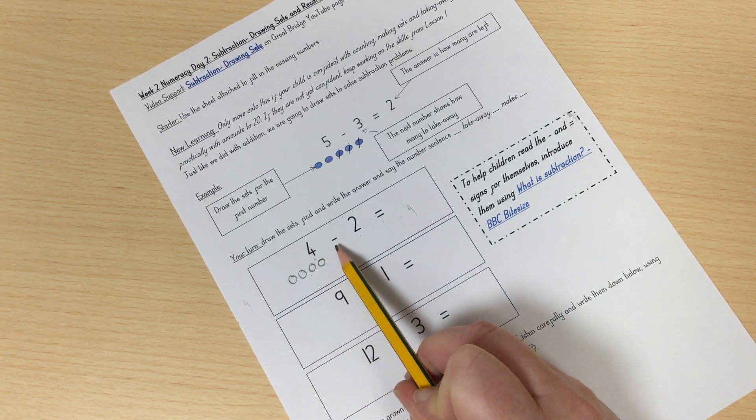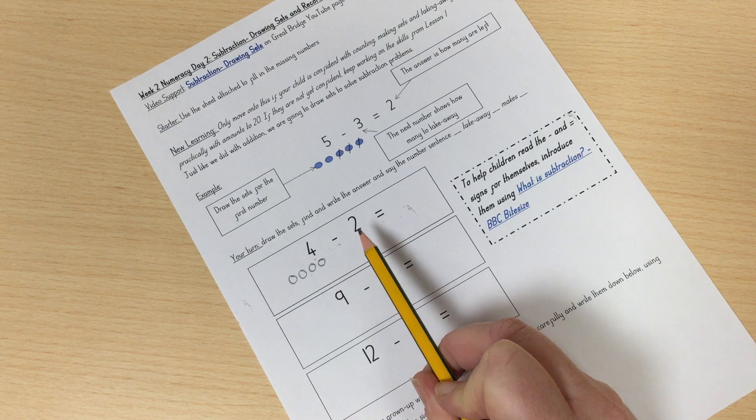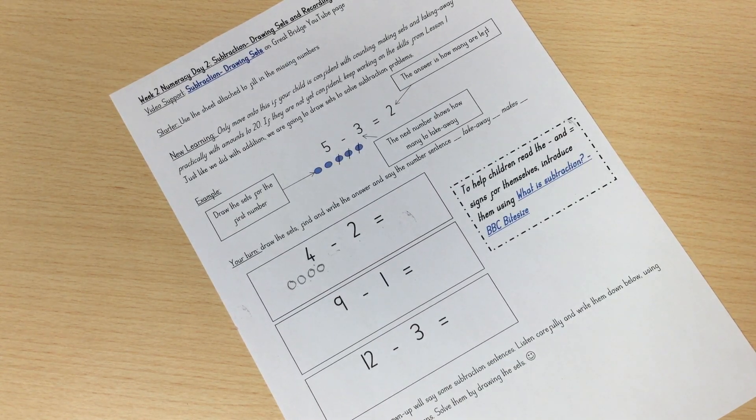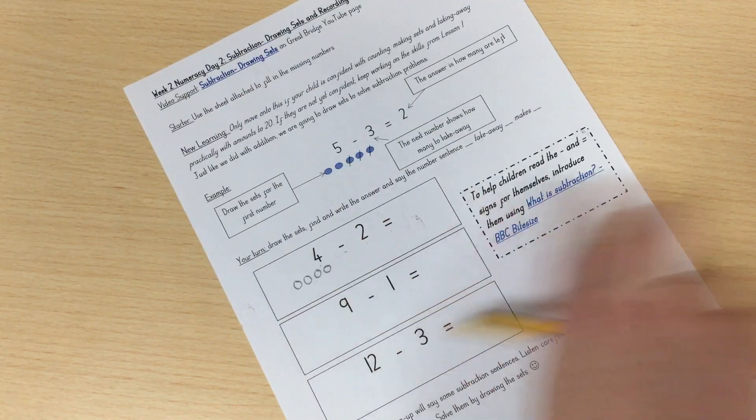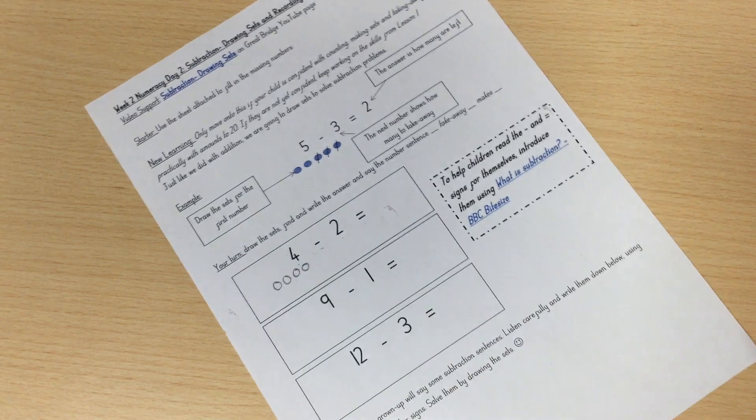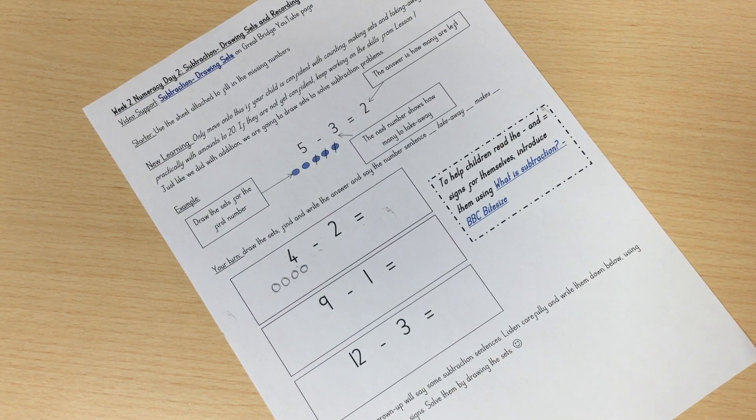Four take away two. Well, that's a bit tricky because I can't move them away, can I, like normal. So how am I going to take away two?